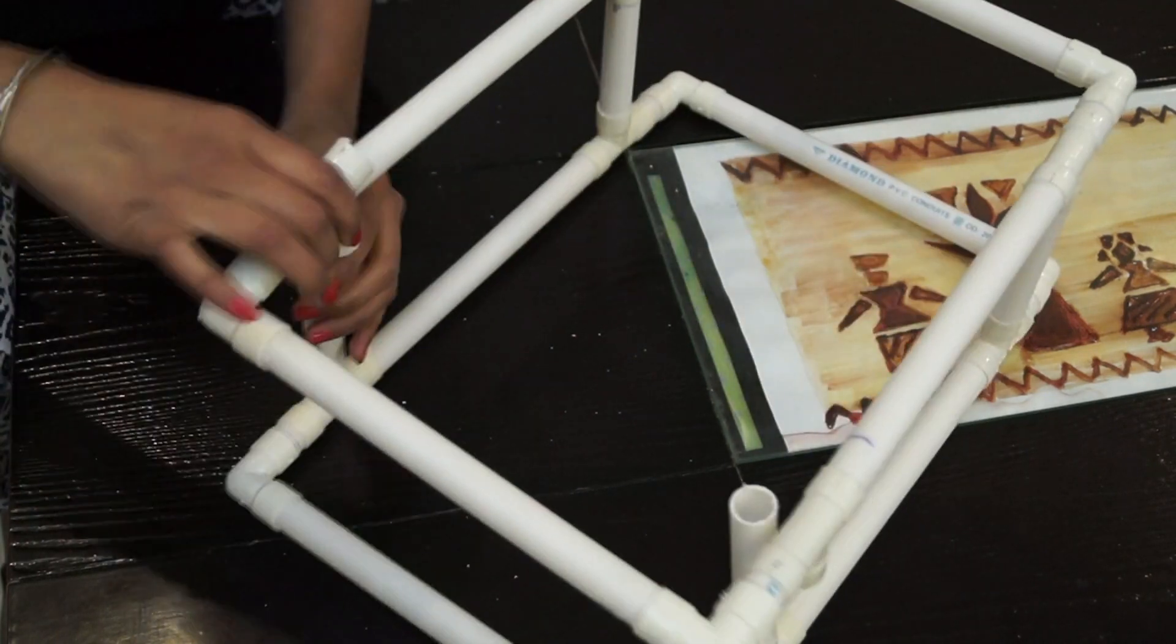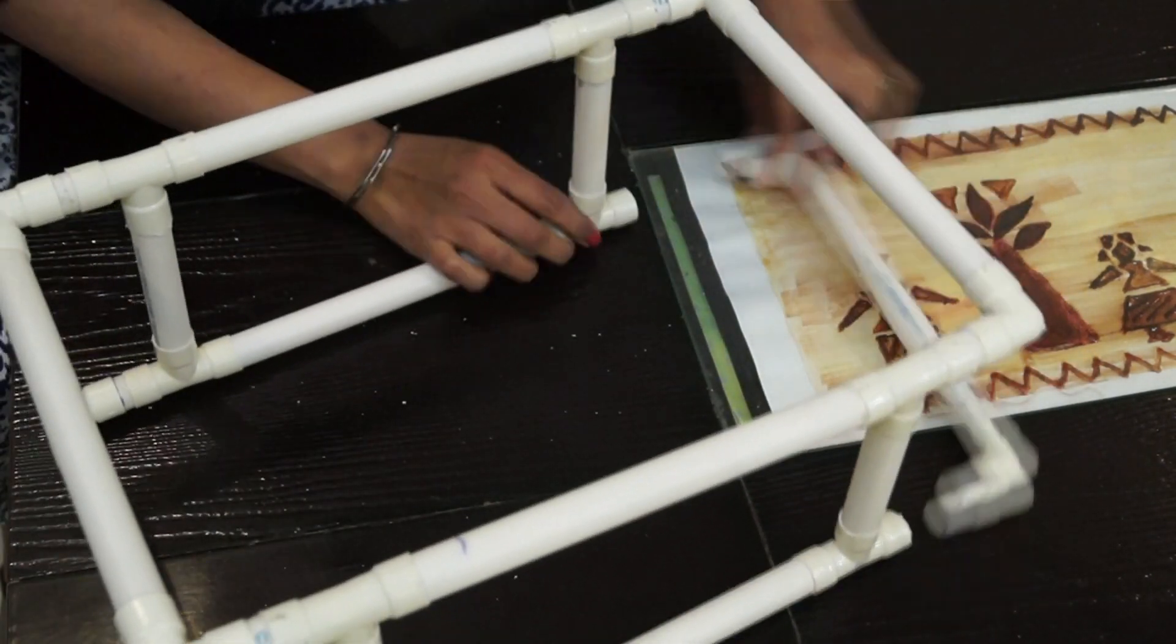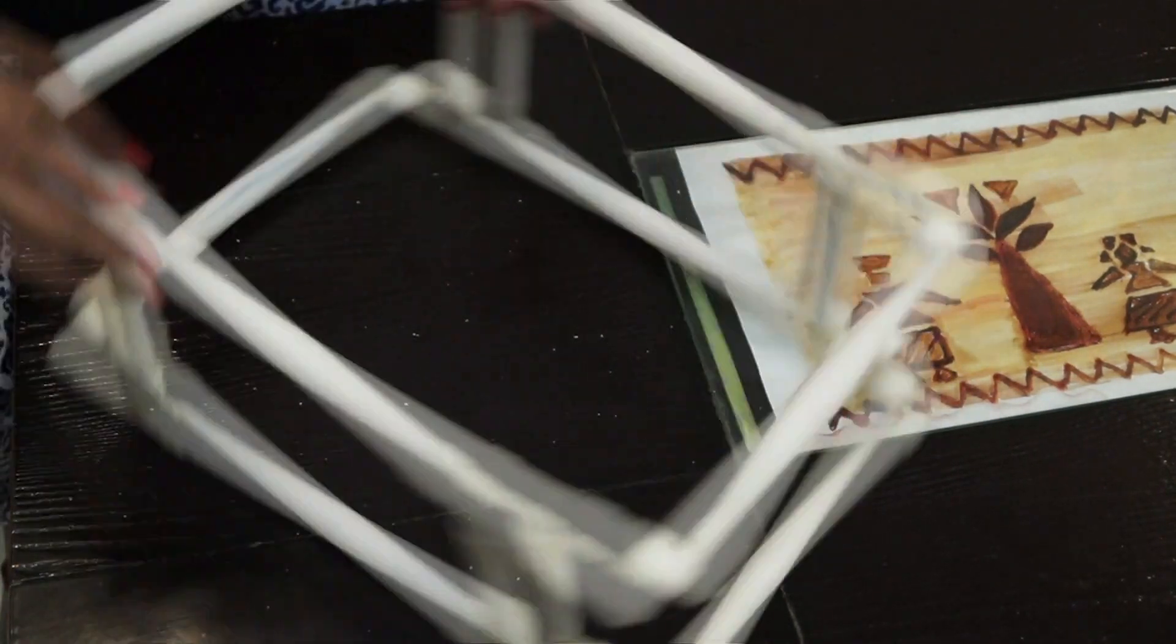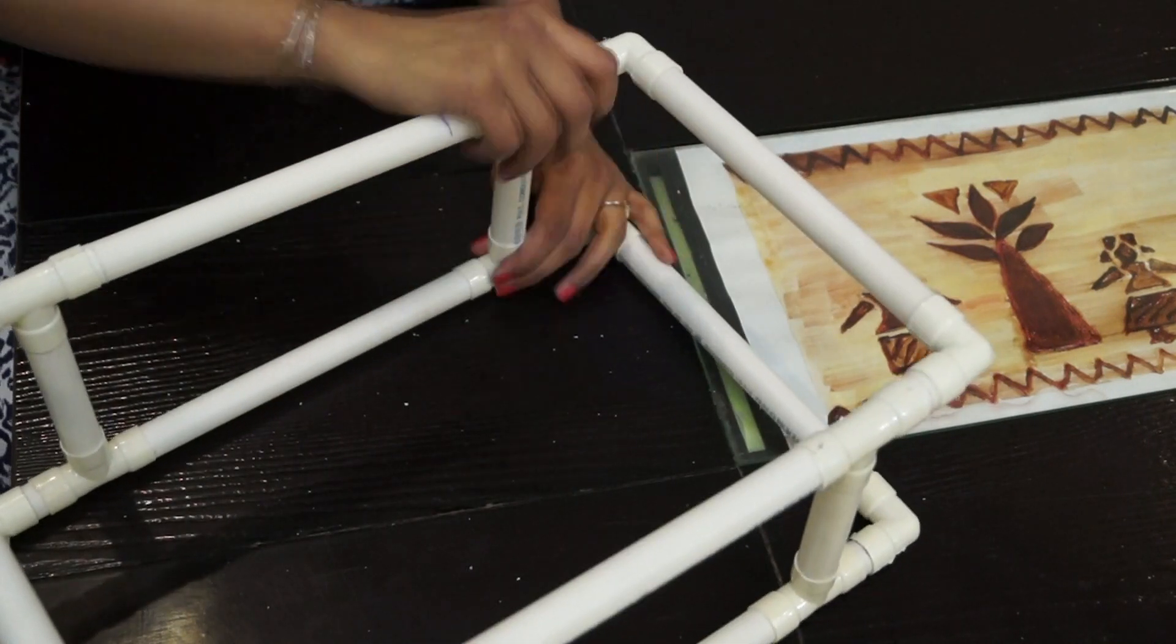Then simply join it with the 4 inch PVC pipe. The way I am doing right here. This thing will give it a lot of sturdiness so that you can put a lot of weight on it.